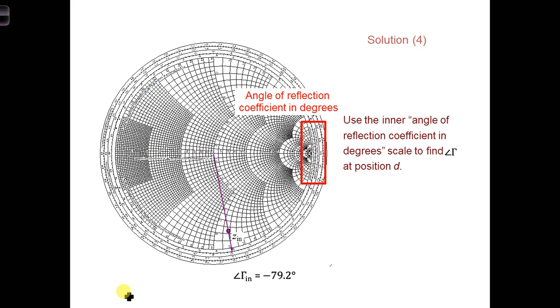And then we can obtain the angle of the reflection coefficient using the angle of reflection coefficient in degrees scale. And we get minus 79.2 degrees.